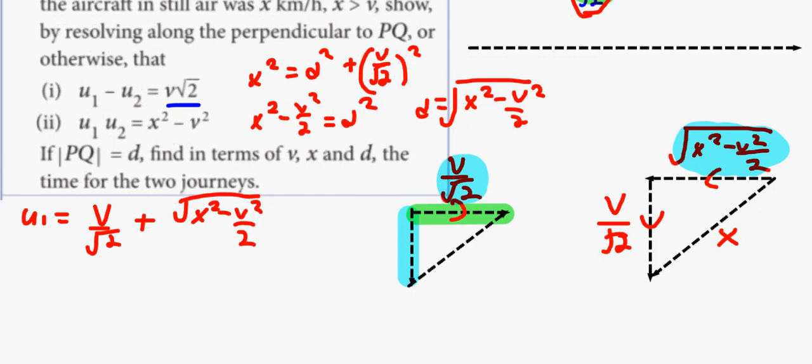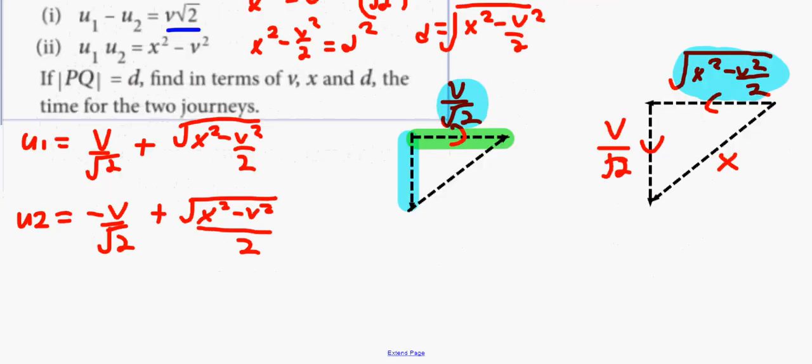So these two parts are actually acting against each other this time. So that will make U2. It's V over root 2 and it's going to be minus V over root 2 because it's acting against it. I'm just looking for the overall speed here. The direction is inconsequential to me. So then that's going to be plus square root of X squared minus V squared over 2. Now, we're just talking about speeds here. Both of these are positive numbers.